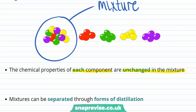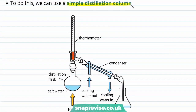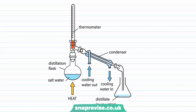A really useful example of these physical processes for separating mixtures is distillation. We can start by thinking about simple distillation, which is used to separate out a liquid from a mixture. A common example used in industry is to separate pure water from seawater. The setup used to carry out simple distillation is known as a simple distillation column, shown in this diagram where all the key features have been labelled.